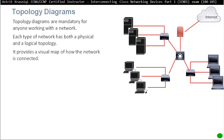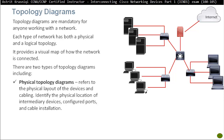A topology diagram provides a visual map of how the network is connected. These days you can even have applications that will do this for you. There are two types of topology diagrams, including the physical topology diagram. This refers to the physical layout of the devices and cabling. As you can see on the screen here on the right, that could be my physical topology.